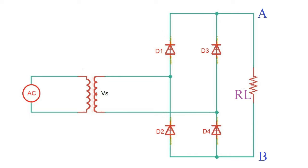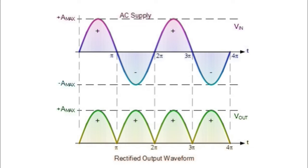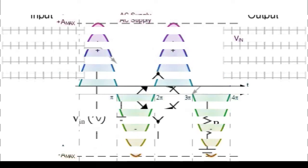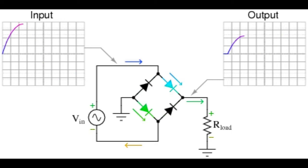So no matter which set of diodes are conducting, node A is always more positive than node B. Therefore the load current and voltage are unidirectional or DC, and the output waveform will be as shown. Although this pulsating output waveform uses 100% of the input waveform, its average DC voltage or current will not have the same value as the input.